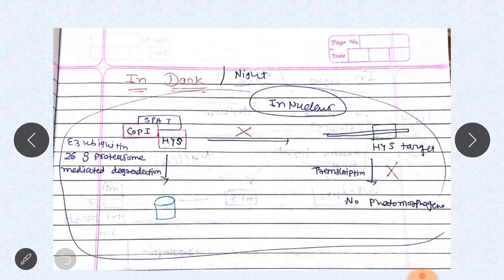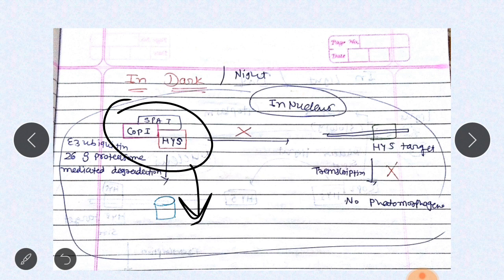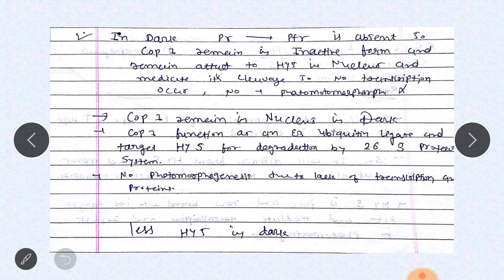In night, due to presence of far-red light, the Pr to Pfr conversion does not occur, and Pfr is converted back to Pr form, so no photomorphogenesis occurs. COP1 is present in the nucleus, binds with SPA1, and mediates ubiquitin ligation of HY5, degrading it via E3 ubiquitin 26S proteasome-mediated degradation. Since HY5 is degraded, no photomorphogenesis occurs in dark. COP1 remains in the nucleus in dark, targets HY5 for degradation, and prevents transcription.